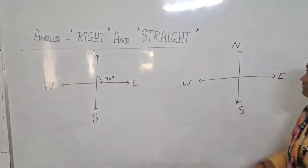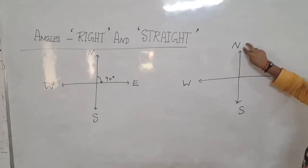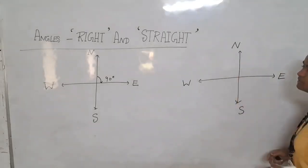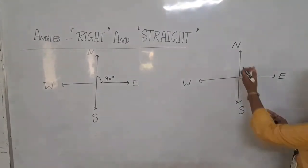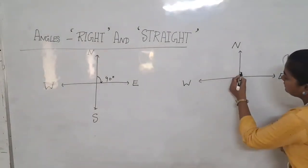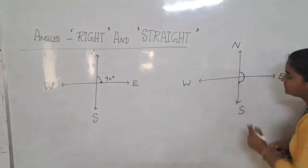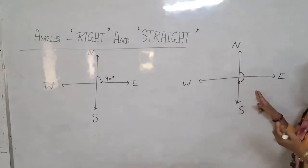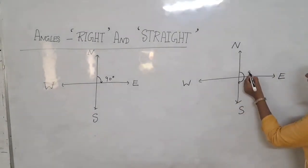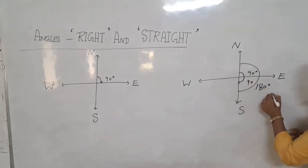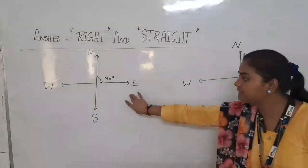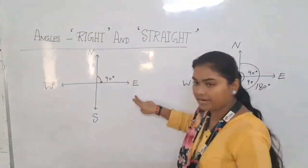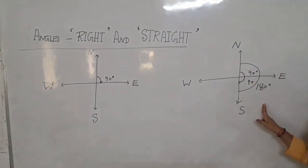Again, if he stands on the north side and turns clockwise from north to south, he has done one straight angle. 90 plus 90 equals a right angle, which is 90 degrees. A complete angle is 360 degrees. Right angle turn is north to east, and north to south turn is vertical.